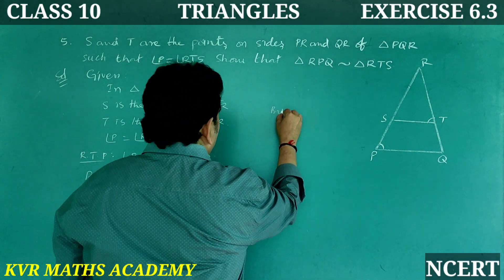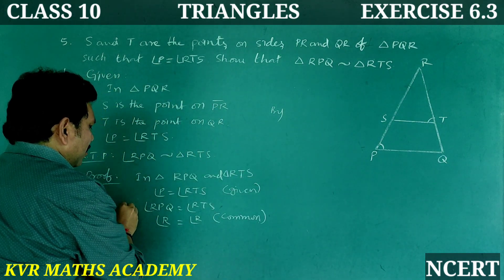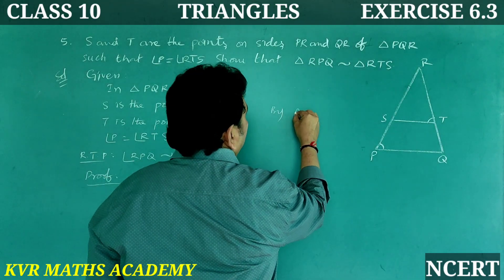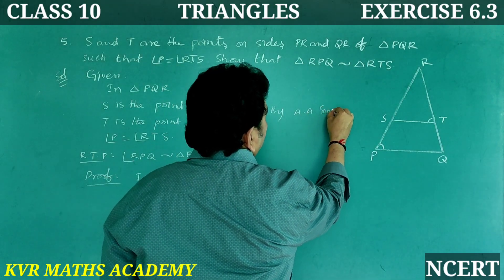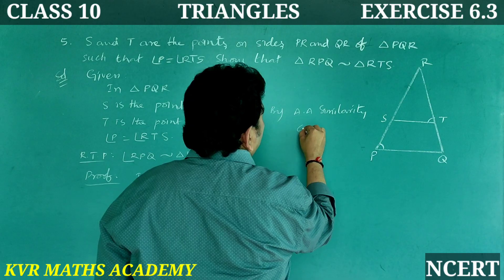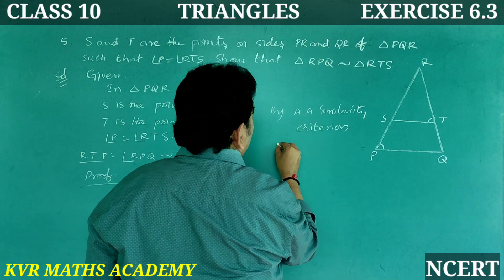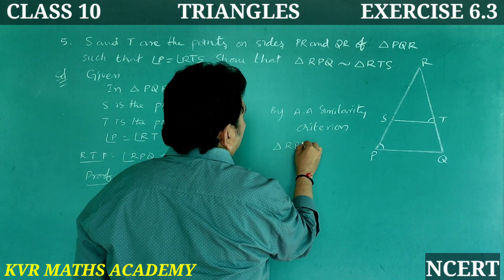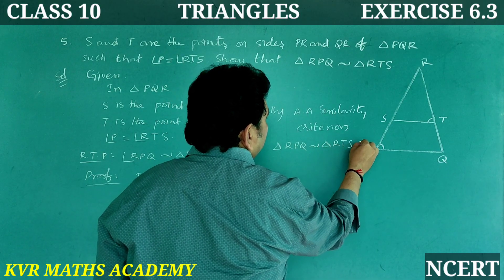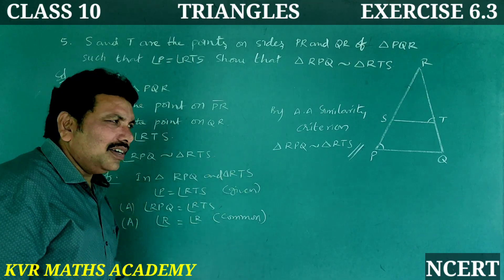So, this angle is equal to this, and this angle is equal to this. By AA similarity criteria, triangle RPQ is similar to triangle RTS. Is it clear? Yes, note it down.